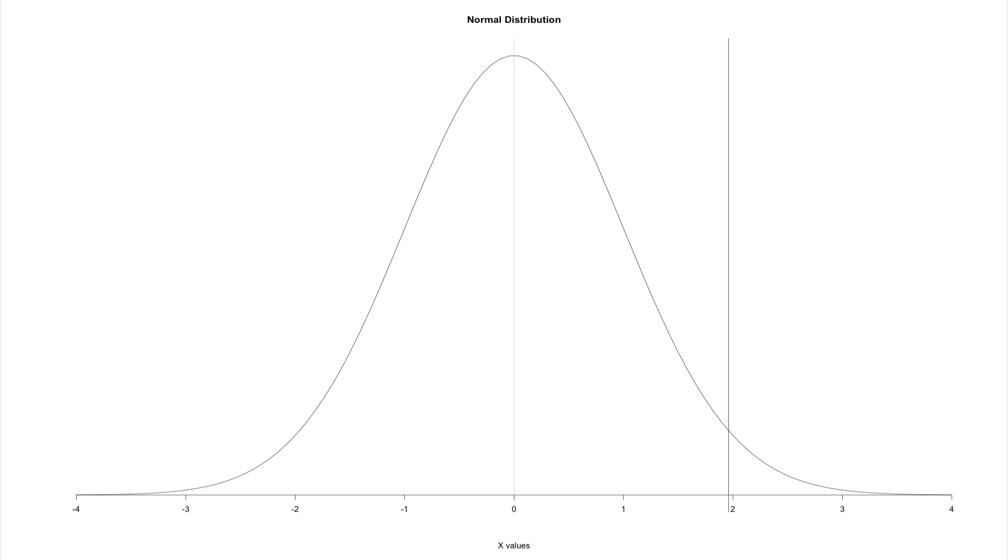So here we have another normal distribution. We've labeled out where 1.96 is, and we draw a vertical line. Where the line intersects there, we're going to look for the area of the curve from that point to the right.